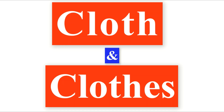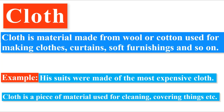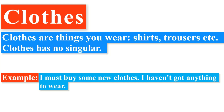The next pair of words is 'cloth' and 'clothes.' The word 'cloth' is a material made from wool or cotton, used for making clothes, curtains, soft furnishings, and so on. For example: 'His suits were made of the most expensive cloth.' Cloth is also a piece of material used for cleaning or covering things. On the other hand, 'clothes' are things you wear — shirts, trousers, etc. Clothes have no singular form. For example: 'I must buy some new clothes; I haven't got anything to wear.'